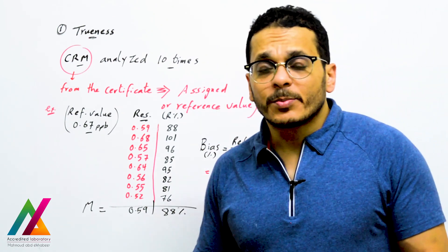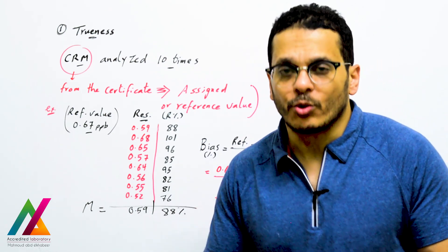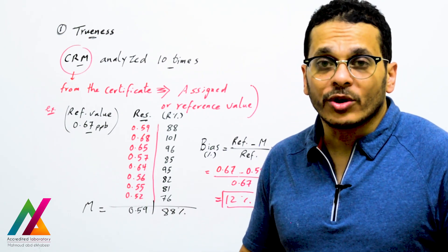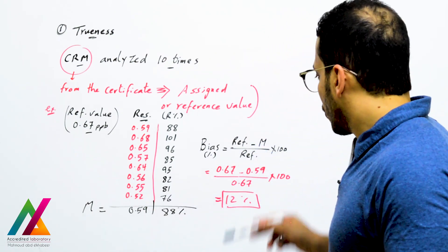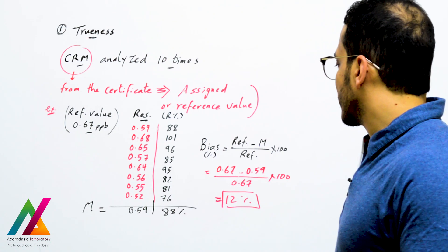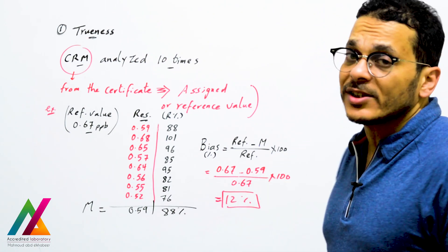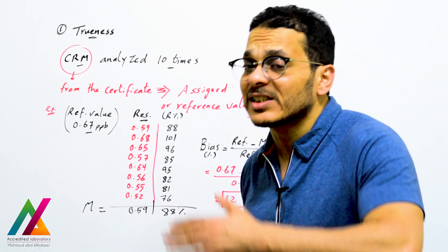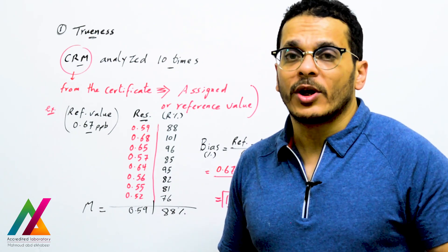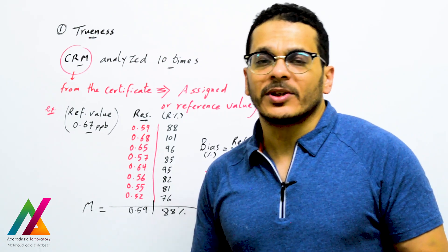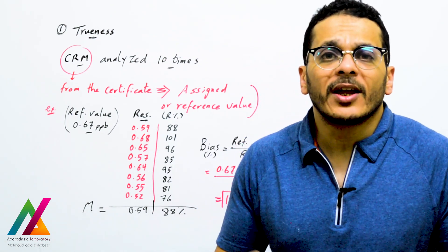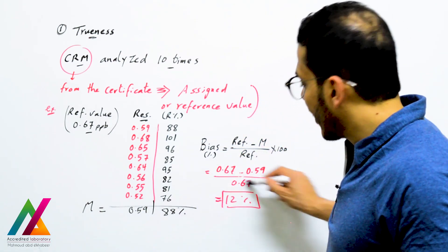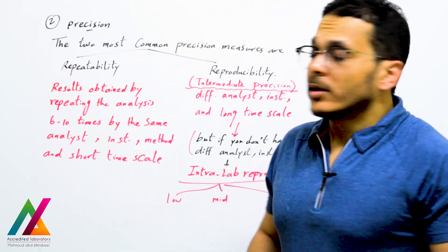After confirming all recoveries are acceptable, you calculate the average between results and the average recovery. The percentage bias — used to evaluate trueness — equals: (reference value minus average of all results) divided by reference value, multiplied by 100. For example: (0.67 minus 0.59) divided by 0.67 multiplied by 100 gives 12% bias. According to the Eurachem guideline, the acceptable range for bias is plus/minus 30%, so a 12% bias is accepted.